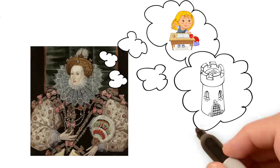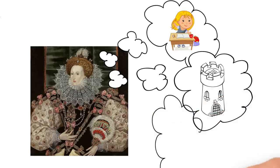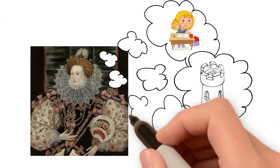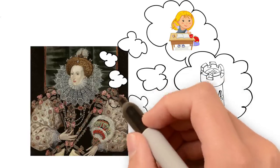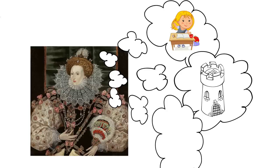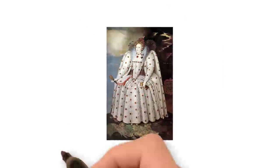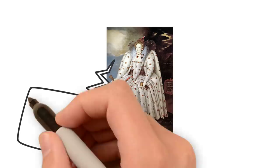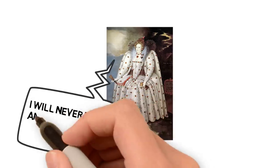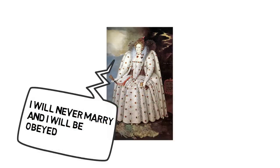Perhaps because she spent some time locked in the Tower of London — her sister considered her dangerous — Elizabeth understands the intricacies of politics and the problems she will face. She is a thoughtful woman who takes a long time to make important decisions, listens to her advisors, and makes sure she makes the right choice.